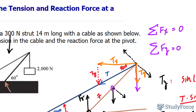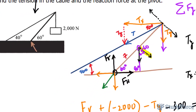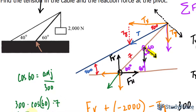We need to come up with an expression for the perpendicular component of the strut's weight. Using geometry: the strut is at 60 degrees, creating a right triangle with an angle of 30 degrees, making the pocket angle 60 degrees. Using cosine, cosine 60 equals the adjacent (the perpendicular component) over the hypotenuse of 300 newtons. Solving: 300 times cosine 60, multiplied by the radius of 7.